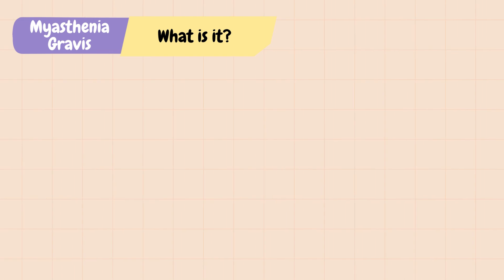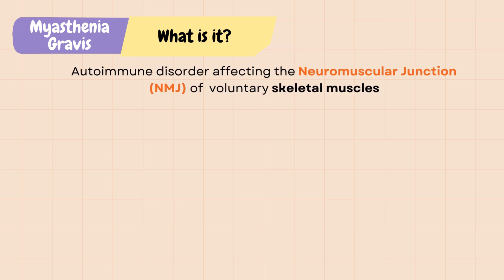Myasthenia gravis, or MG, is an autoimmune disorder affecting the neuromuscular junction of the voluntary skeletal muscles, such as the muscles in the face, eyes, throat, extremities, and more.